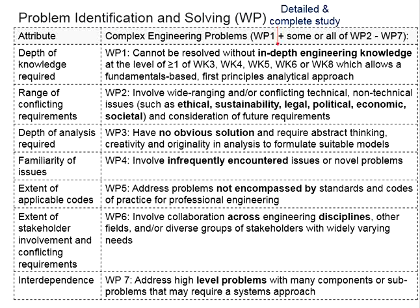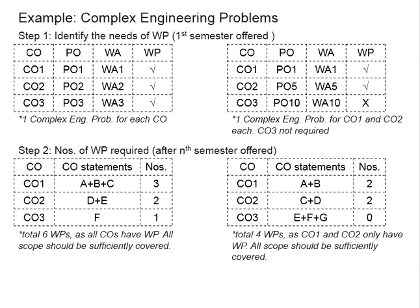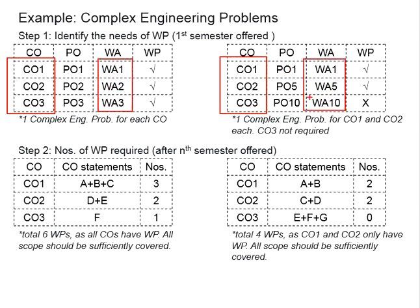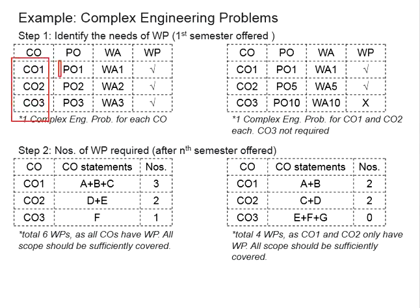Let us discuss a few important points related to the applications of the complex engineering problem. The big question is: how many complex engineering problems do we need to produce? My answer is that it depends on the number of COs that have the elements of complex engineering problems. To determine this, we need to look at the mappings of the POs.